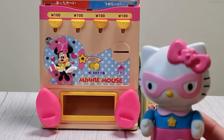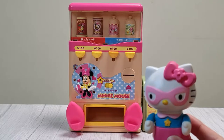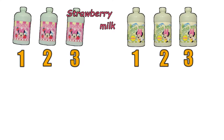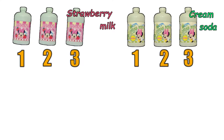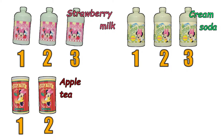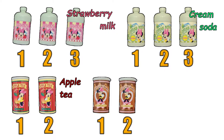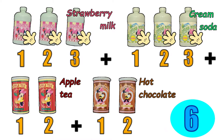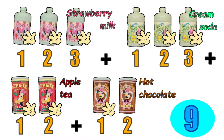Hmm, so how much is one drink? Each drink costs one coin! And there are... 3 strawberry milk, 3 cream soda, 2 apple tea, and 2 hot chocolate drinks! So, all together, there are 10 drinks in the vending machine!